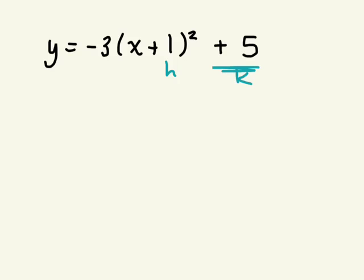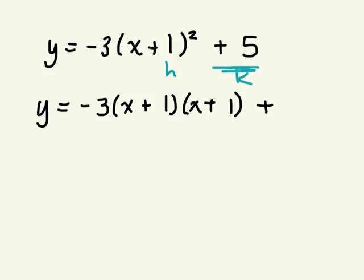So what do you have to do to figure out the y-intercept for this? Put it into standard form. Do exactly what we just did. Expand and simplify. And then once it's in standard form, once we've expanded and simplified, you'll notice the c value. It's not going to be 5. It's going to be something else. I want you guys to expand this.